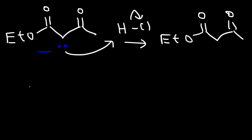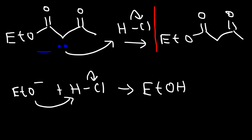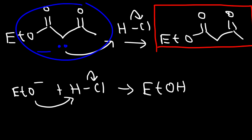Under acidic conditions, it's not going to be reversible because in order for the reaction to go backwards, we need the strong base — this particular ethoxide ion. But under acidic conditions, it's not going to stay in that form. It's going to turn into ethanol. So once you add HCl, this comes out as your final product. But under basic conditions, this is your product.